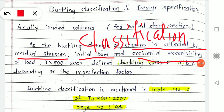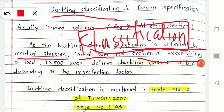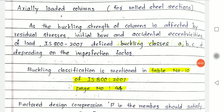In the previous tension members session we covered section classification — plastic section, slender section, and others — which remain the same in compression members too. Now, residual stresses are stresses which develop during the casting or rolling procedure of any section, whether hot roll or cold roll. Some stresses remain inside the section from the manufacturing process. Those stresses are called residual stresses.